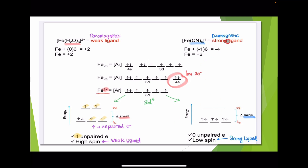When you count the unpaired electrons for the strong field ligand, the answer is zero — no unpaired electrons. The strong field ligand is a low spin complex and will have a large delta.